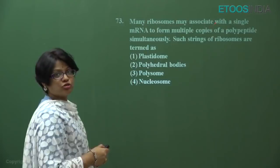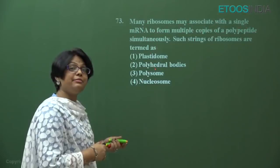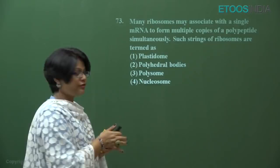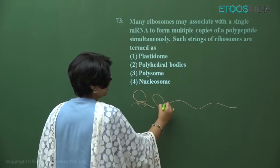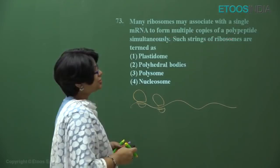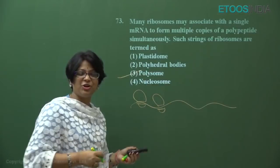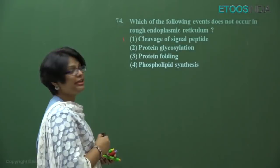Question number 73: many ribosomes may associate with a single mRNA to form multiple copies of a polypeptide simultaneously — when many ribosomes attach to one mRNA, many polypeptide chains are synthesized simultaneously. Such a string of ribosomes is termed a polysome. Answer is number three.